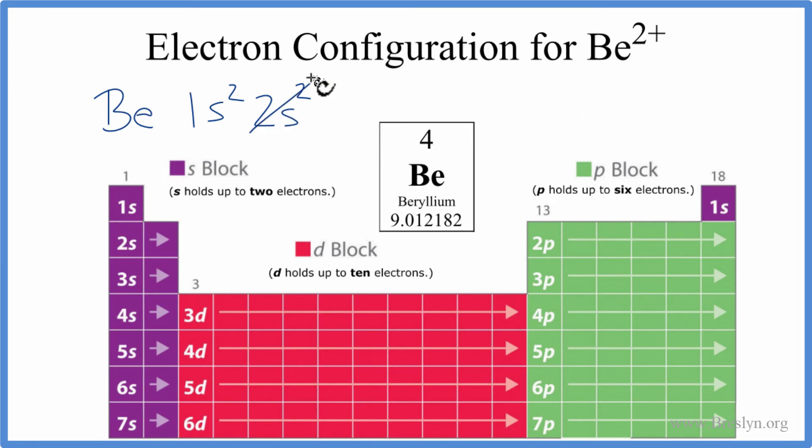So we can just lose these two electrons here, that makes this the beryllium ion. So the electron configuration for Be2+, that's just 1s2.